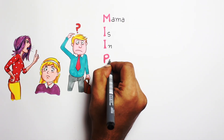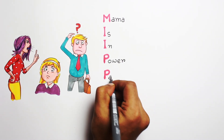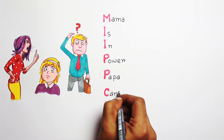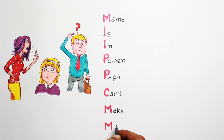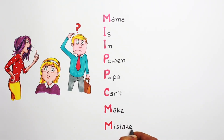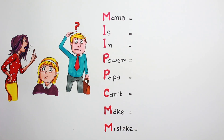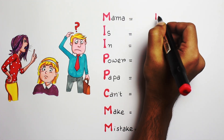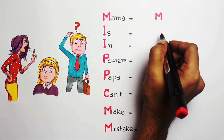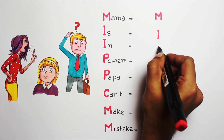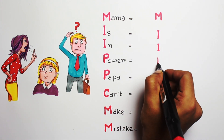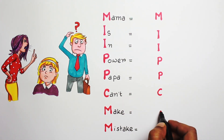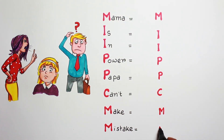The mnemonic is: Mama is in power, papa can't make mistake. Now follow the red letters. M stands for molar, I stands for incisor, P for premolar, and C for canine.